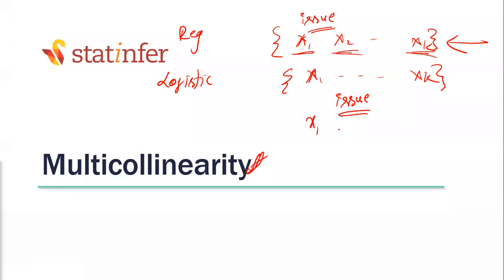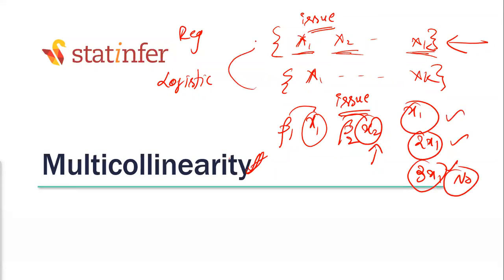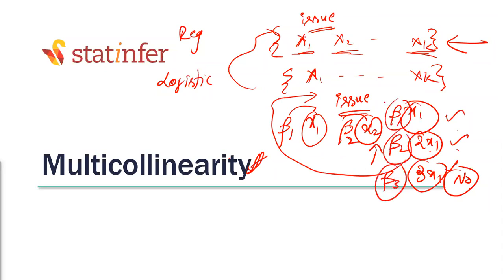If you bring in logistic regression and X1 and X2 are carrying the same information, then you cannot trust the coefficient of X1 or the coefficient of X2 — both will be wrong. Since it is logistic regression, you cannot just say it's okay to keep X1, 2X1, 3X1 because this is classification. The same issue we had in linear regression will come here as well. If variables are related like X1, 2X1, 3X1, the coefficients are still not trustworthy. Multicollinearity is a problem even in logistic regression.